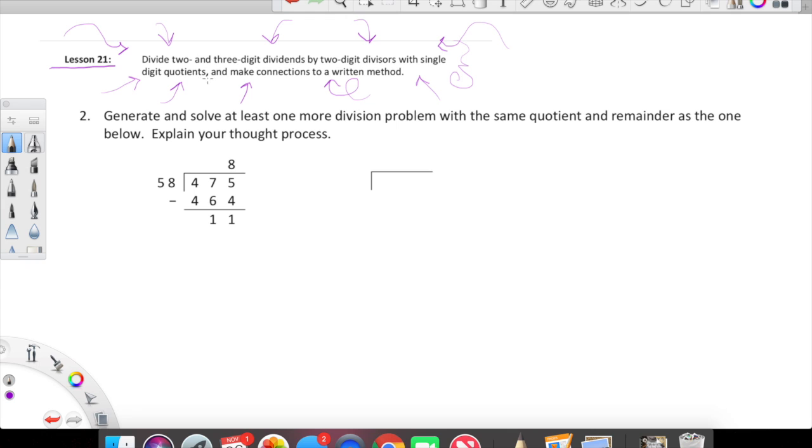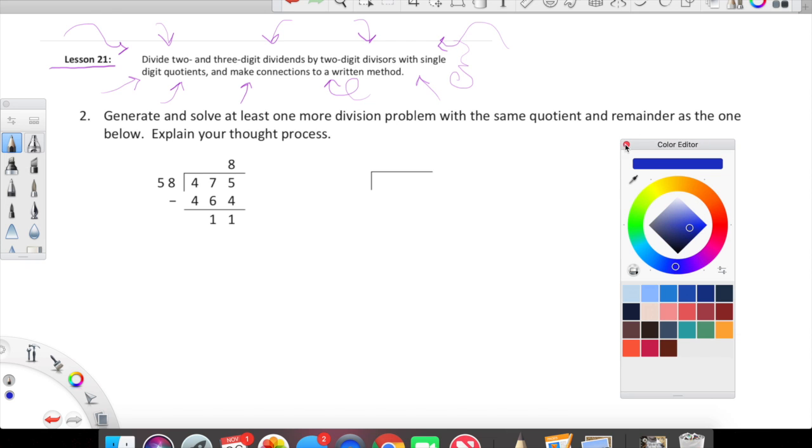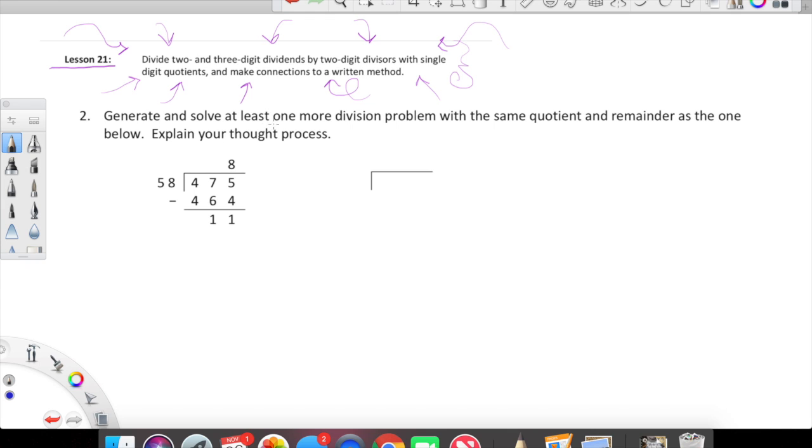Let's look at this one. This problem is really interesting. I thought it would be a good one for us to do together. Here we're asked to generate and solve at least one more division problem with the same quotient and remainder as the one below. Explain your thought process. Let's just remind ourselves of our vocabulary. In this lesson, we're dividing two and three-digit dividends. Dividend is our monkey that lives inside that house of division. And then our divisor, of course, is whatever we're dividing by. And then the quotient lives up here.